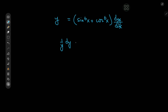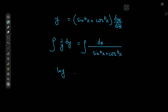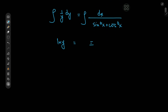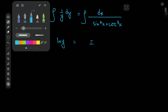Separating the variables, we get 1/y dy equal to dx divided by sine to the sixth power of x plus cosine to the sixth power of x. Now all we have to do is integrate. On the left-hand side we have log y, and on the right-hand side we have some work to do — let's call that integral I.